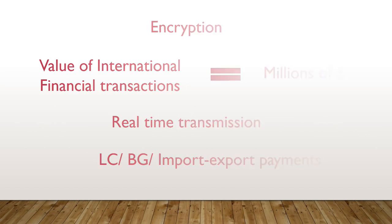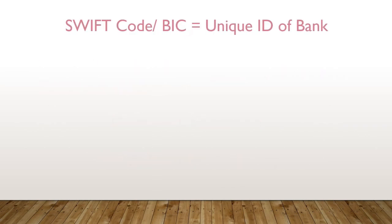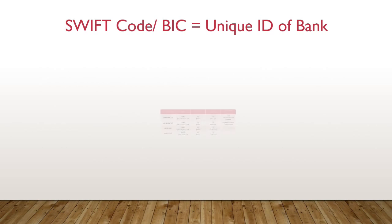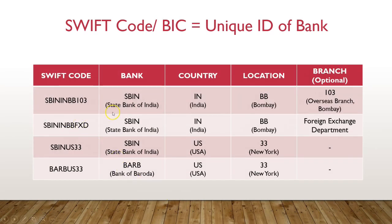Now, what is a SWIFT code? It is basically a unique ID for a bank which is part of the SWIFT system. It is also known as a BIC code or Bank Identifier Code. The first four characters stand for the name of the bank, the next two stand for the country in which the bank branch is located, the next two are for the location, and the last three are optional for that particular branch.